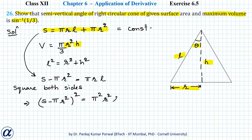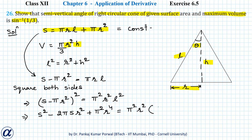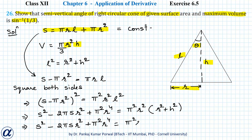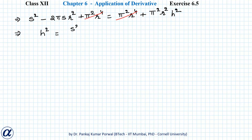Expanding gives S² − 2πSr² + π²r⁴ = π²r²l². Substituting l² = r² + h² on the right side gives π²r²(r² + h²) = π²r⁴ + π²r²h². The π²r⁴ terms cancel from both sides, leaving S² − 2πSr² = π²r²h², which gives h² = (S² − 2πSr²) / (π²r²).